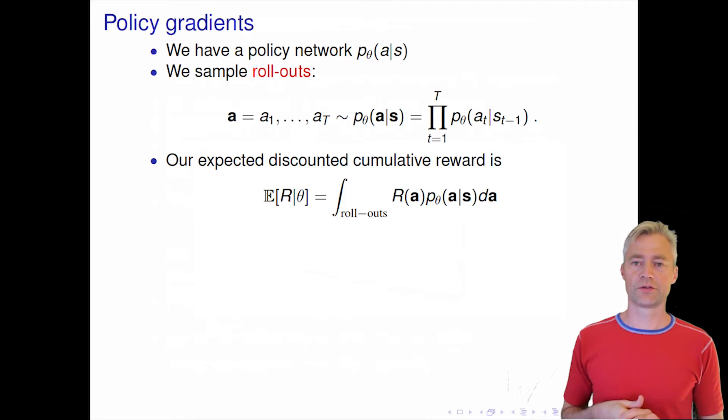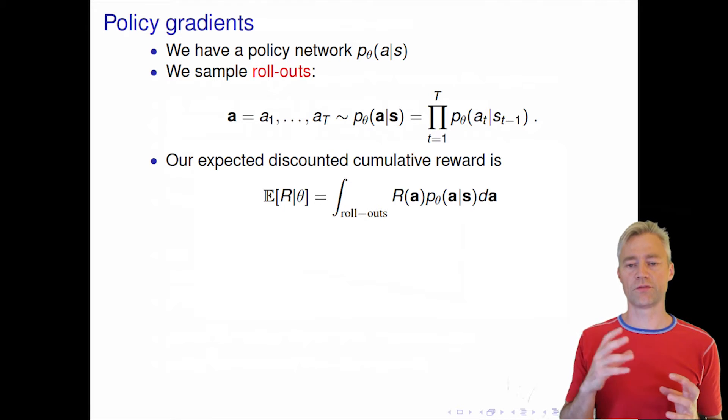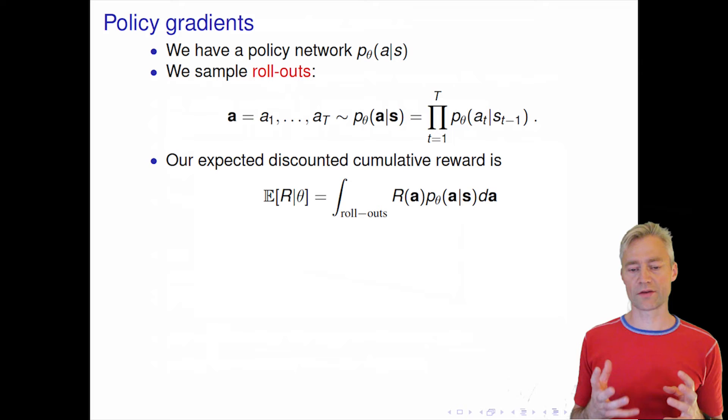The details of the policy gradient approach. So we have made a model for the policy network. This model is the conditional distribution of our actions given the state. So it's a stochastic model, right? It has parameters theta.